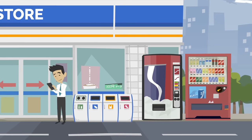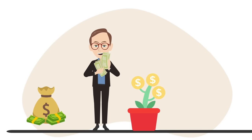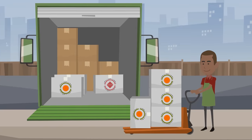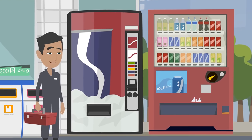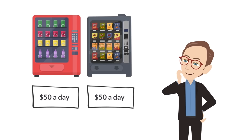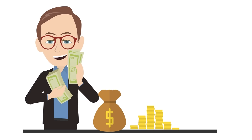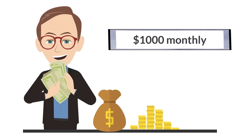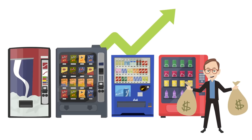Once set up, vending machines practically run themselves. Customers insert coins or swipe cards to make purchases, and you earn money without actively managing the machines. Your main responsibilities will be restocking products and performing occasional maintenance, which you can delegate. Imagine this: if each vending machine generates $50 a day, even after accounting for expenses like restocking, you could still earn at least $1,000 monthly income from just one machine. And of course, the more machines you have, the higher your potential income.